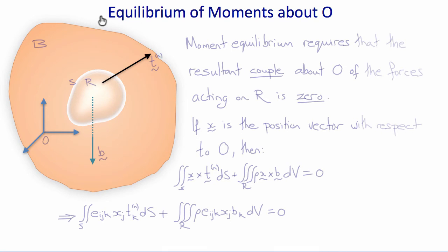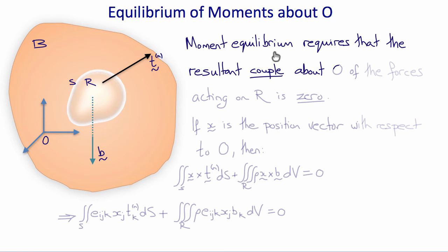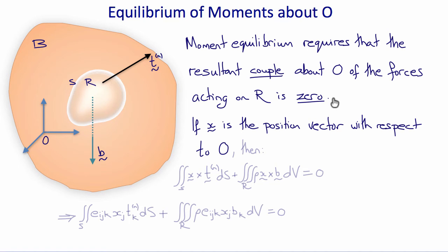Now we can do the same thing for the equilibrium of moments taken about the origin O. We again have a body B, with a closed region R and surface S. Surface tractions T^N act on the surface, body forces B per unit mass act on the volume, and O is the origin of our coordinate frame. Moment equilibrium requires that the resultant couple about O of the forces acting on R is zero. If x is the position vector with respect to O, the moment due to surface forces is the surface integral of x cross T^N with respect to S, and the moment due to body forces is the volume integral of rho times x cross B, and this must equal zero.